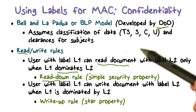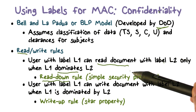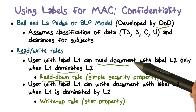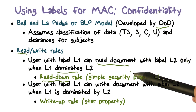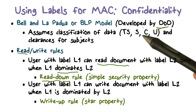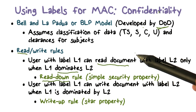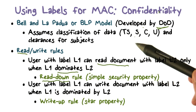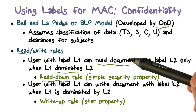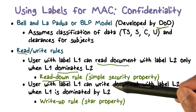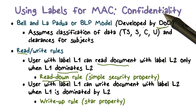Let's look at the rationale for writing up. Remember, our focus is on confidentiality and disclosure of information. This model says more sensitive information cannot flow to users who are not cleared at that level. If I could write at a lower level, I may have in my possession some more sensitive information. If I write it into a lower-level document, someone cleared at that lower level could come and read it in the future.